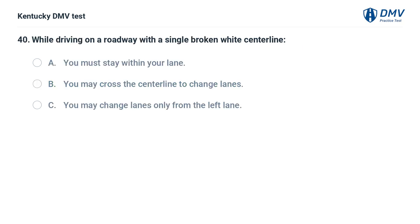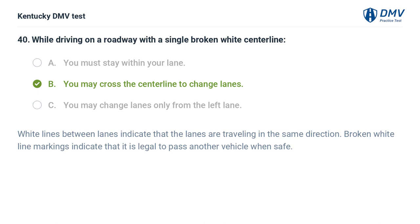While driving on a roadway with a single broken white centerline: A. You must stay within your lane. B. You may cross the centerline to change lanes. C. You may change lanes only from the left lane. The correct answer is B, you may cross the centerline to change lanes. White lines between lanes indicate that the lanes are traveling in the same direction. Broken white line markings indicate that it is legal to pass another vehicle when safe.